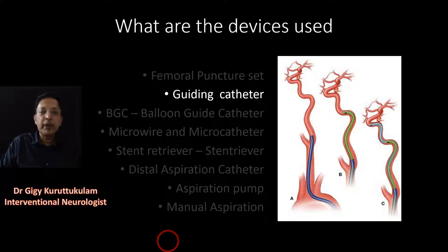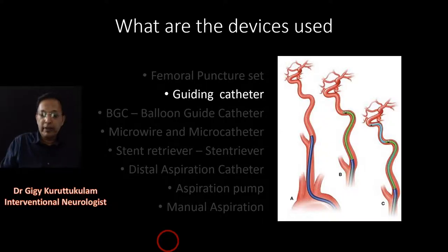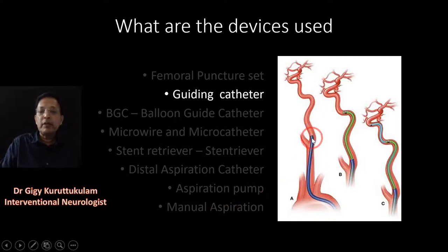For that, we use what is called a guiding catheter. A guiding catheter is essentially a stiff catheter extending all the way from the femoral artery into the carotid artery — something like a scaffolding, a very stiff catheter through which the small catheters and stent retrievers can easily be advanced into the brain.